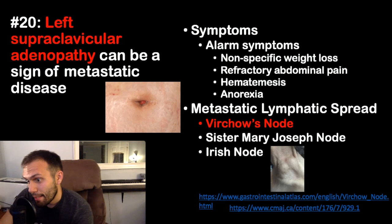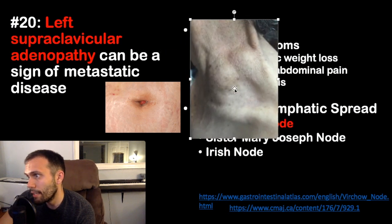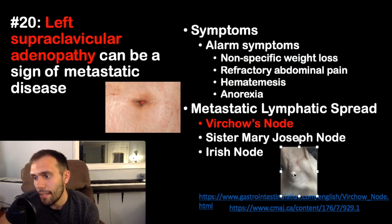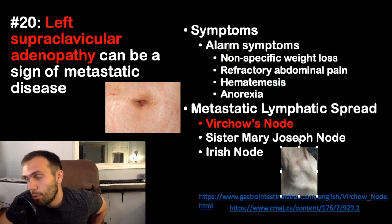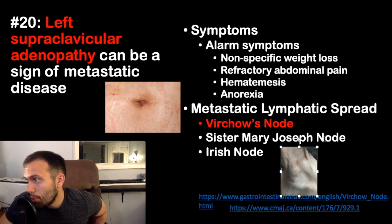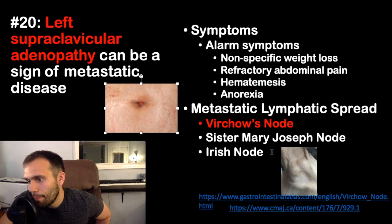Fact twenty: left supraclavicular adenopathy (Virchow's node) can be a sign of metastatic gastric disease. Other important metastatic nodes include the Sister Mary Joseph node (periumbilical, indicating metastatic spread) and the Irish node (left axillary). Always look for alarm symptoms in these patients.